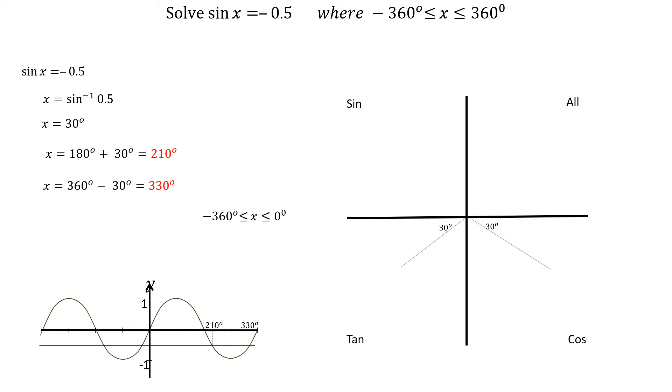Next, going in a clockwise direction from 0, we will find the solutions between 0 degrees and minus 360 degrees. The first angle in this direction is minus 30 degrees, and the last angle is at minus 180 degrees plus 30 degrees, which is minus 150 degrees.